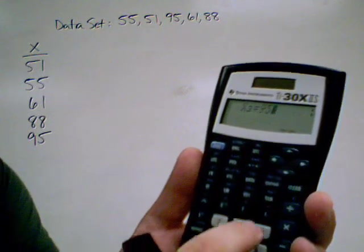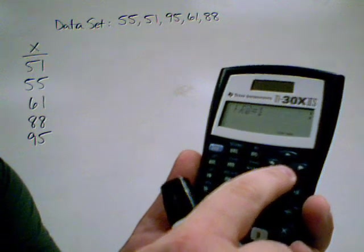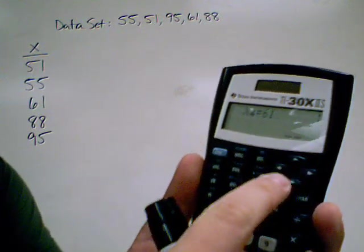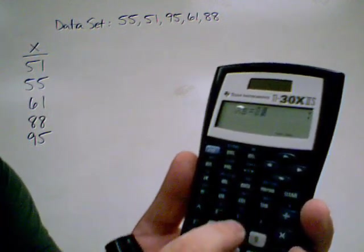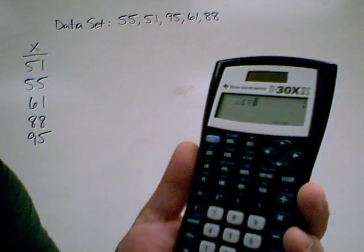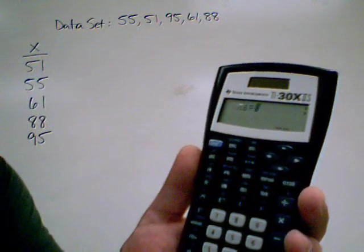X3 is 95. We only have one. 61 is the next one. And 88 is the last one. Now, once we hit X6, we don't have an X6. So, we're done.